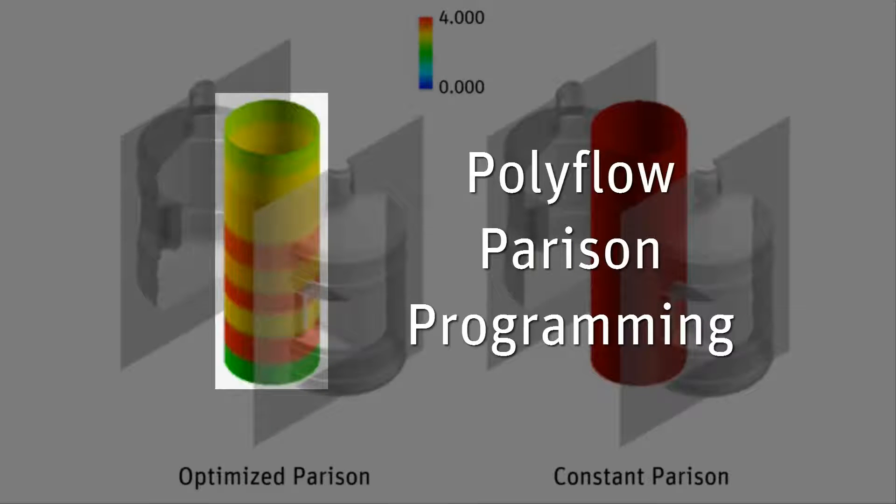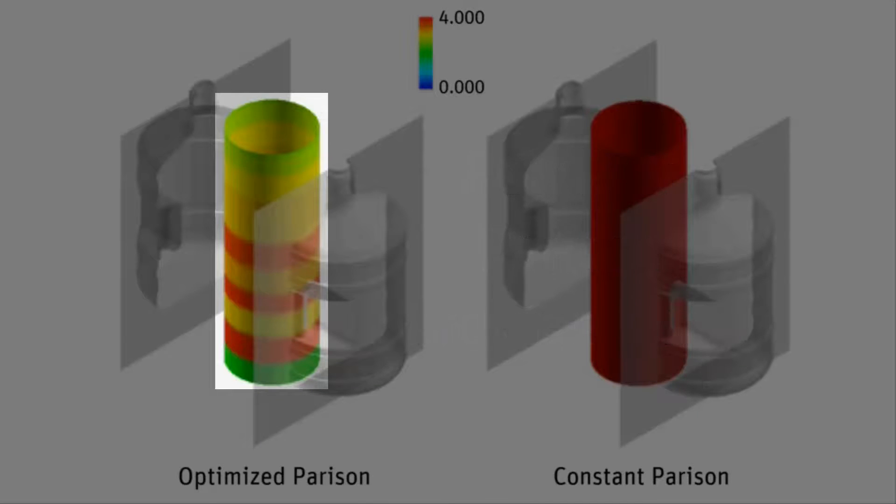Polyflow can predict where the initial thickness can be reduced without compromising the final product. The parison programming feature provides an answer to the following question: What should the initial thickness of the parison be to meet a targeted final thickness?